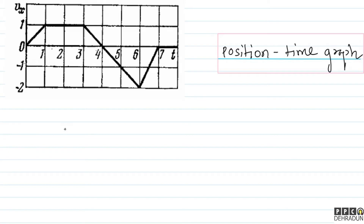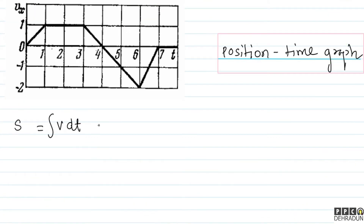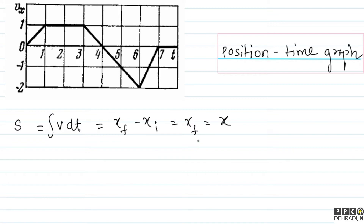Dekhiye bachyo, humein yeh pata hai ki integration of v dt yeh humein displacement deta hai. Ab displacement yahan par kaisa hoga — socho ki initial position yahan par kya di hai: x = 0. Toh displacement = x final minus x initial, lekin x initial 0 hai, toh basically humein x final mil raha hai. Matlab agar main area under vt graph lun 0 se us particular time tak, toh mujhe us particular time par us particle ki position mil jaayegi.